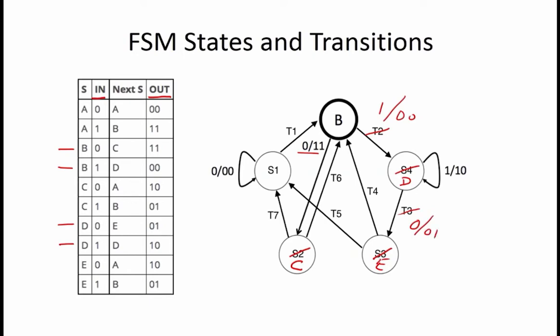The truth table then shows us that from state E, a one input takes you back to state B. So T4 equals 1 slash 01, which in turn means that T5 equals 0 slash 10, and state S1 equals A.